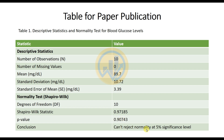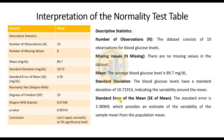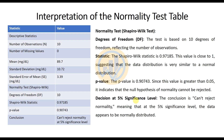For the interpretation of descriptive statistics: the data consists of 10 observations from blood glucose level. There are no missing values in the data set. The mean average blood glucose level is 89.7 mg/dL. The standard deviation is 10.71, indicating the variability around the mean. The standard error of the mean is 3.38, which provides an estimate of the variability of the sample mean from the population mean.